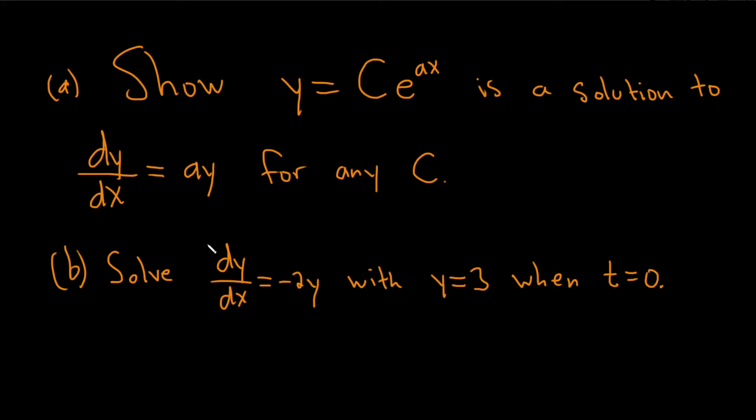In this video, we're going to do a problem involving a simple differential equation. It says, show that y equals c times e to the ax is a solution to this differential equation for any choice of our constant c. And then part b wants us to solve this differential equation under these conditions. This is called an initial condition.